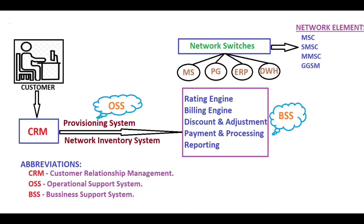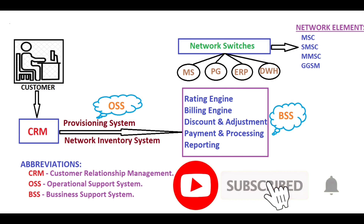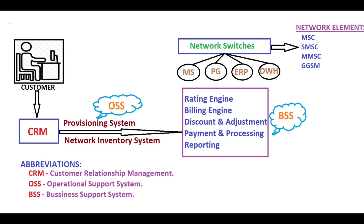BSS - Business Support System - has the following modules: Rating Engine, Billing Engine, Discount and Adjustment, Payment Processing, and Reporting. The Rating Engine collects CDRs from the Mediation System and applies different rates to each CDR as per the rate sheet provided by the service provider, using a job run concept. Voice-related CDRs are run as voice EH.dat and SMS-related CDRs are run as SMS EH.dat.